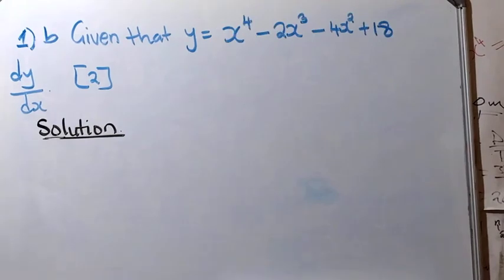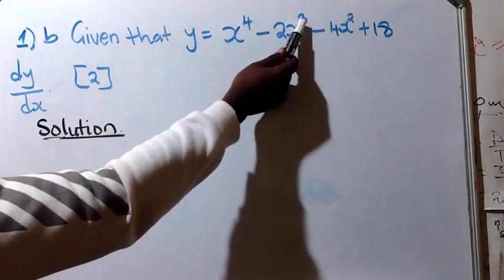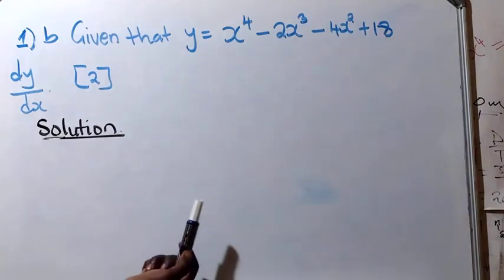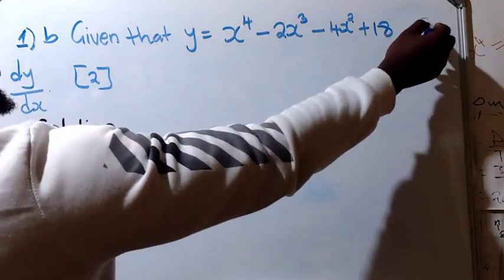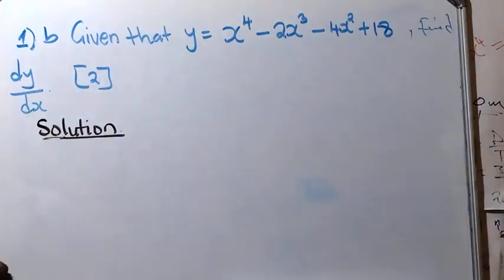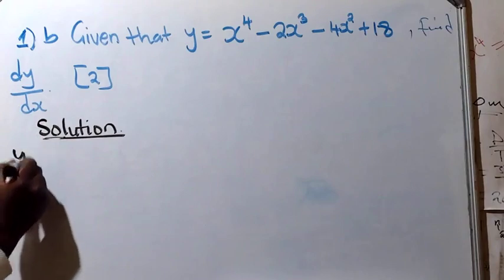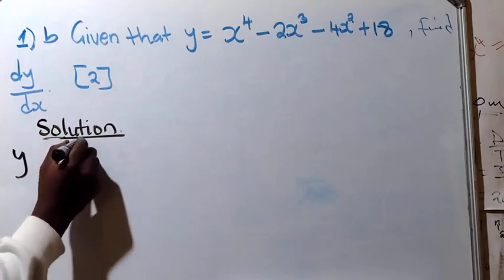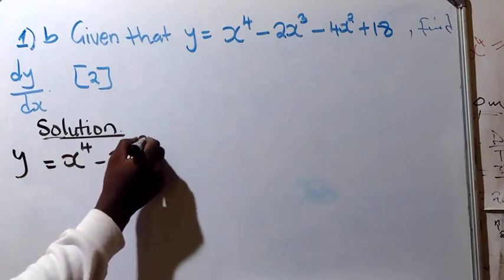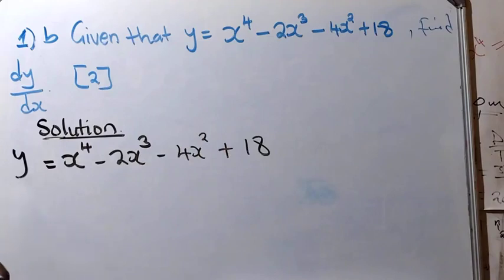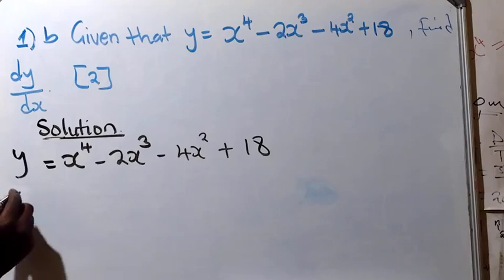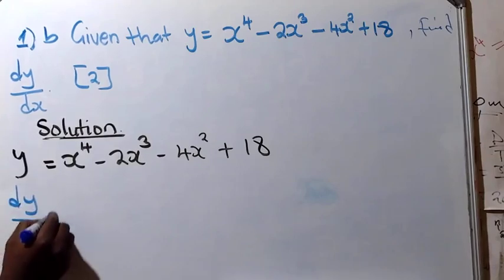We have just answered question A. Now let's see how we can answer B. Given that y is equal to x raised to the power of 4 minus 2x raised to the power of 3 minus 4x squared plus 18, find dy/dx. So first, write the function: y = x⁴ - 2x³ - 4x² + 18. We want to differentiate y with respect to x using the formula method.